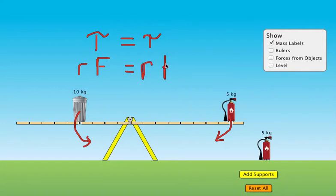Remember when you're measuring radius, you measure from the support to wherever the force is being applied. So it would be this distance for the trash can, and it would be this distance for the fire extinguisher.